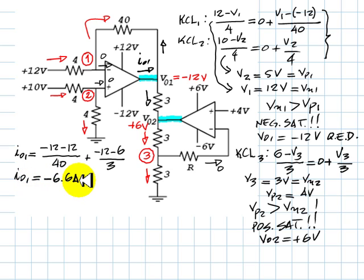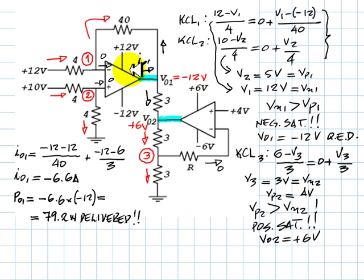The output current is negative 6.6A. We multiply that current times this voltage and we obtain the output power of this OPAMP. And that output power is 79.2W delivered power, given the signs and the directions of voltages and currents.